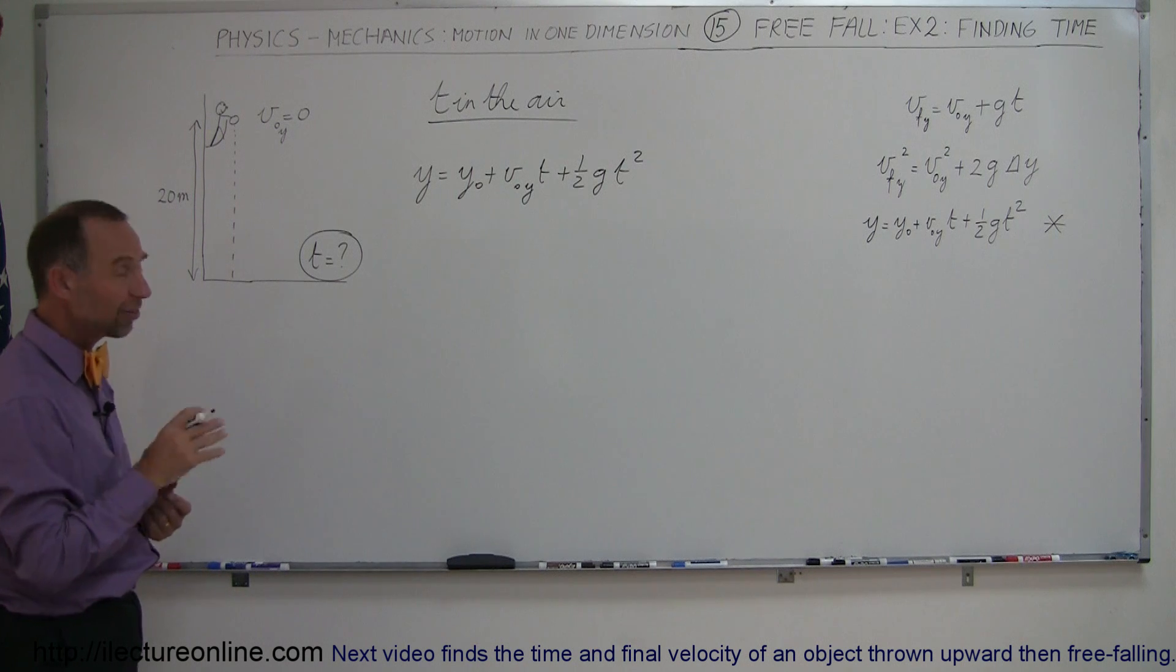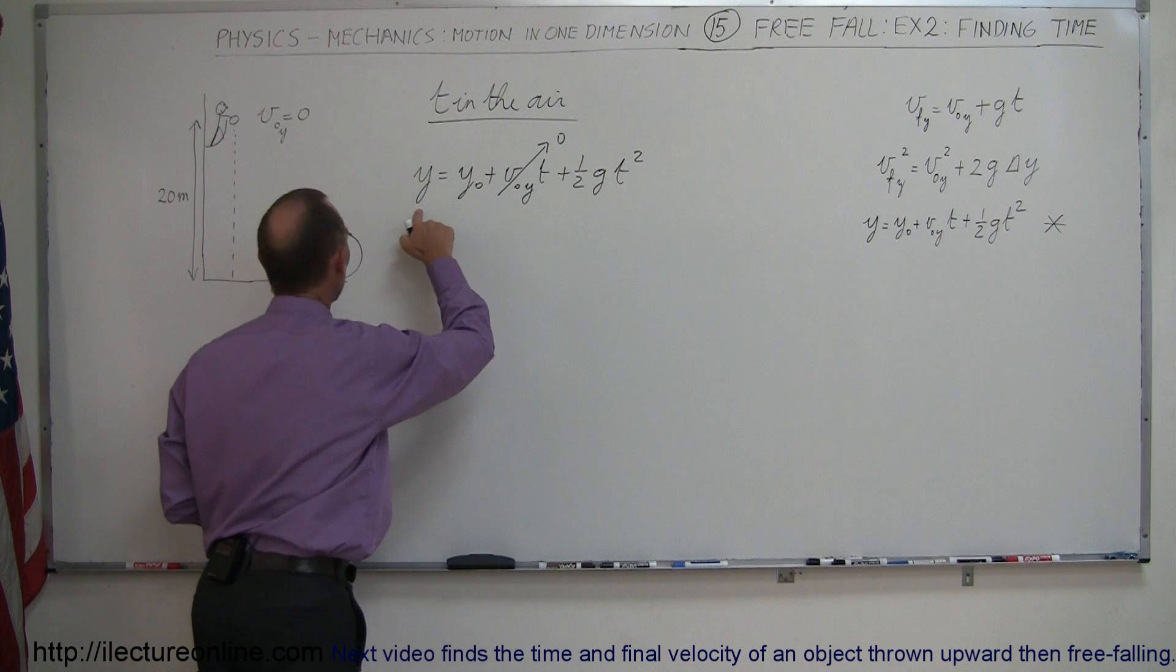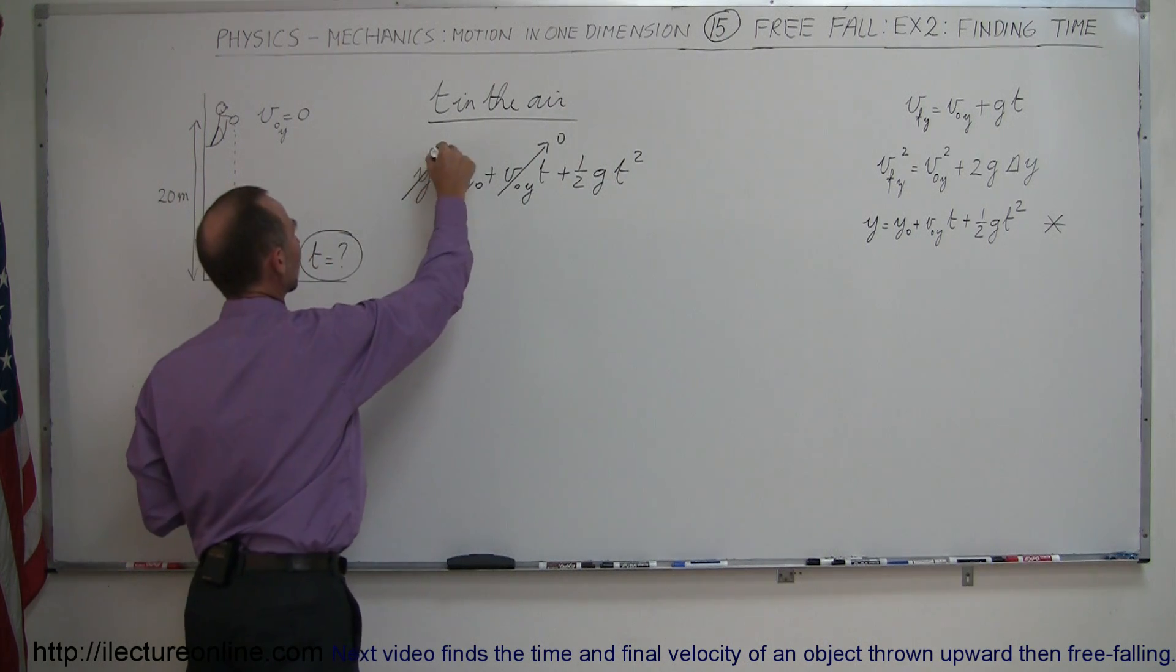Now, the initial velocity in the y direction is zero, so this term will go to zero. The final height, y, is zero when it hits the ground. So this goes to zero.